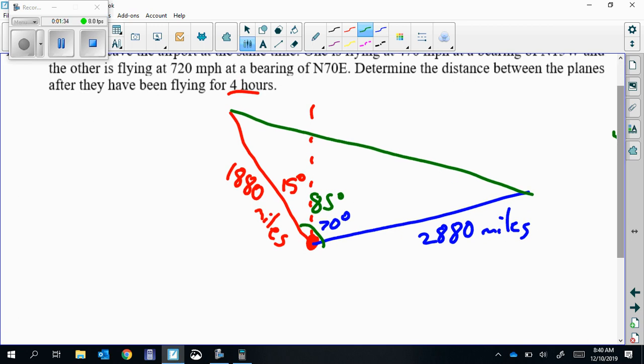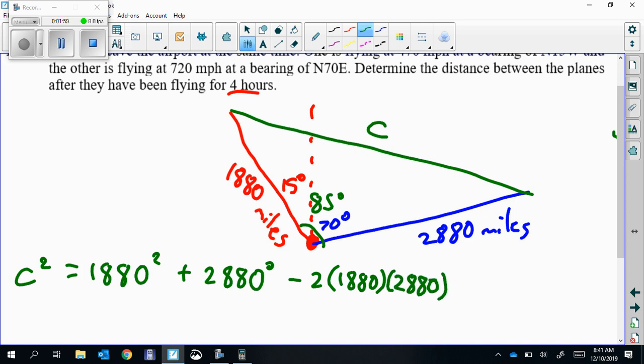So that's law of cosines. We're going to find this side right here. We'll call it C. C squared equals A squared plus B squared minus 2AB times cosine of that angle right there, which is 85 altogether.